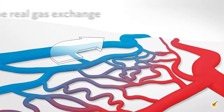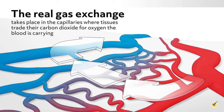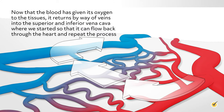The real gas exchange takes place in the capillaries, where tissues trade their carbon dioxide for the oxygen the blood is carrying. Now that the blood has given its oxygen to the tissues, it returns by way of veins into the superior and inferior vena cava, so that it can flow back through the heart and repeat the process.